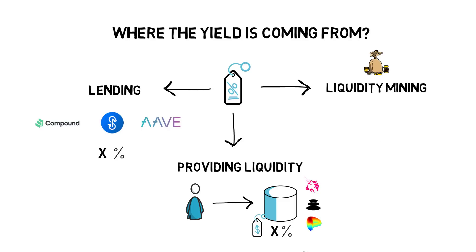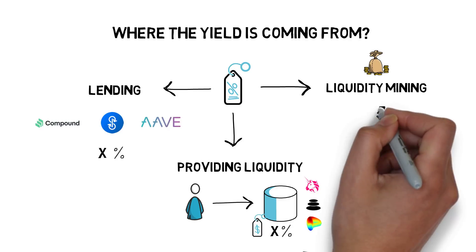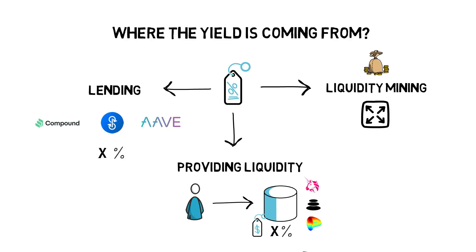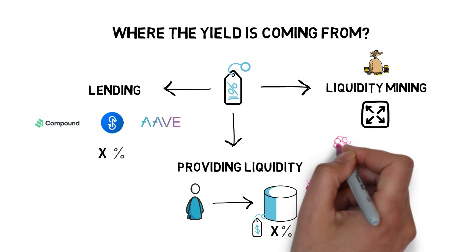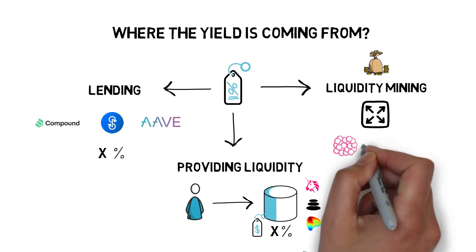Liquidity mining is the biggest enabler of high yields in yield farming. This is because the extra tokens that are received can be instantly sold for profit, boosting the APYs.